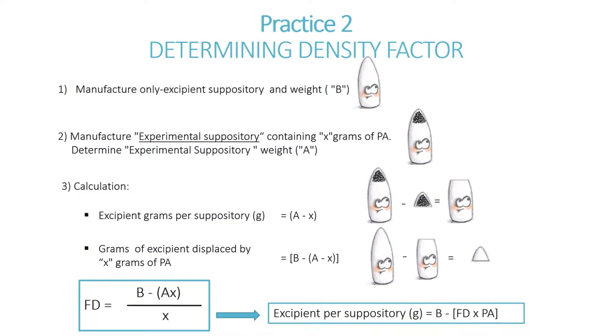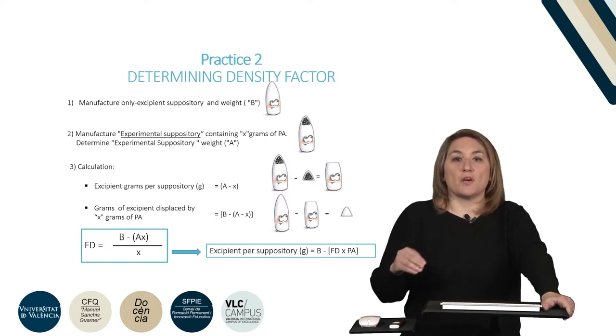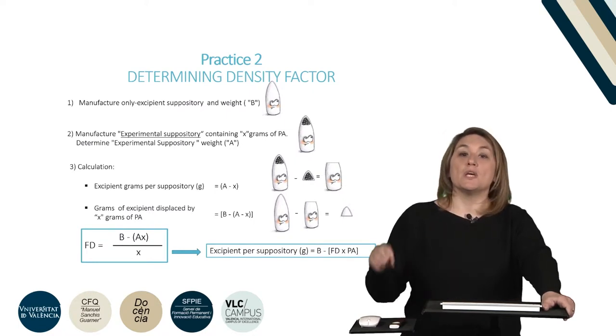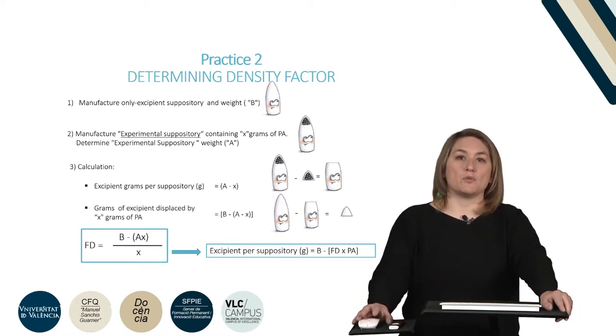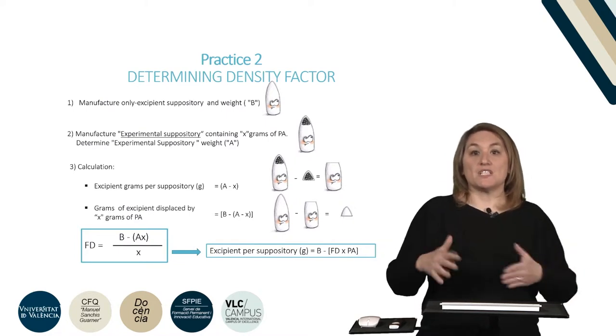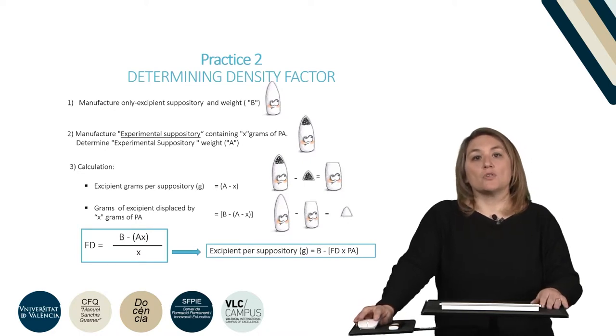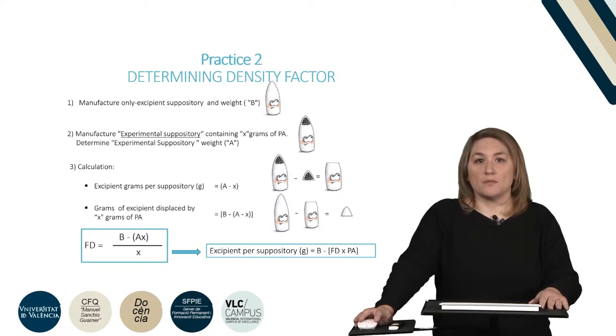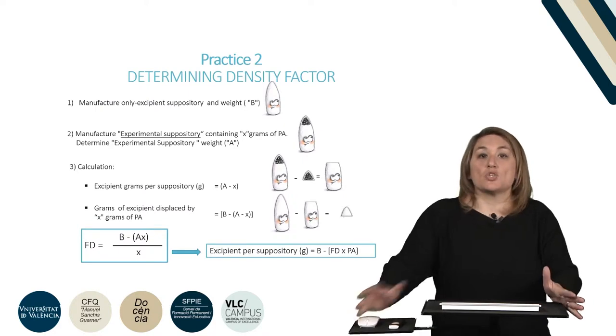Each suppository must contain an exact dose of the drug. In the formula, the amount of excipients necessary for one suppository is usually not specified, and therefore it has to be calculated previously. For this purpose, we need to know the amount of excipients that is displaced, or in other words, that is replaced by the dose of an active principle. This data also depends on the density, so this value is called density factor. And as we have said previously, when it is not known, it has to be calculated previously.